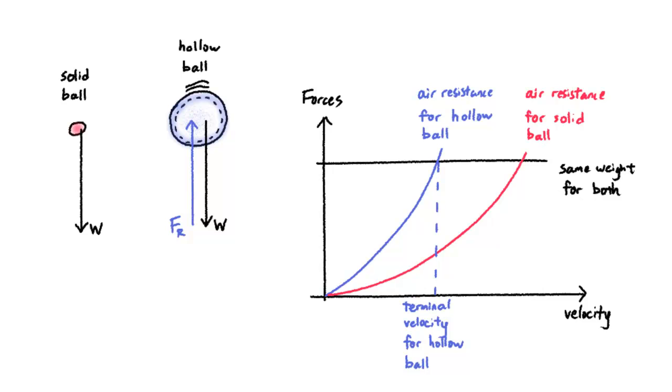The solid ball, on the other hand, being more streamlined, gets to accelerate to a higher speed before the upward air resistance matches its downward weight. Hence, all things equal, a more streamlined object attains a higher terminal velocity than a less streamlined one.